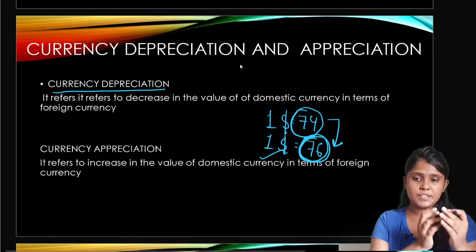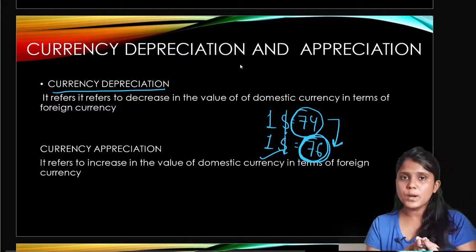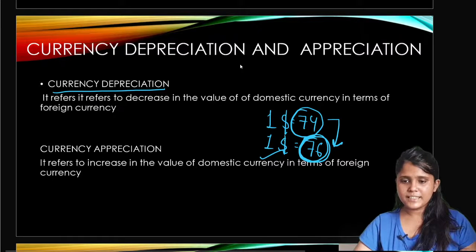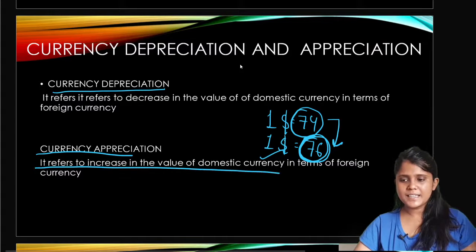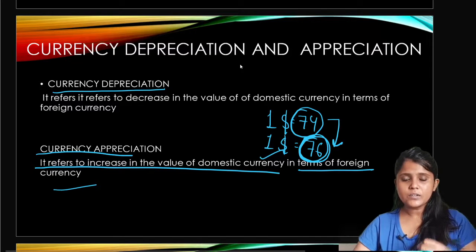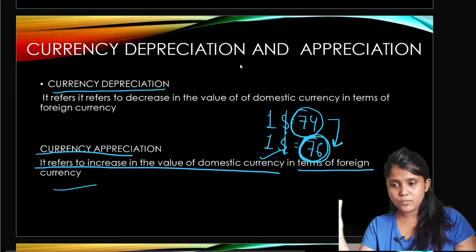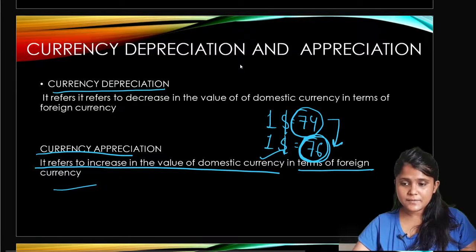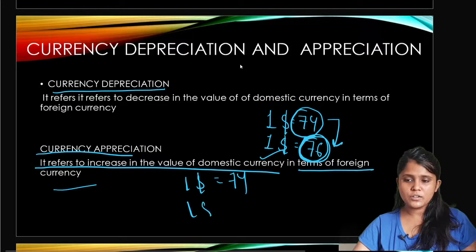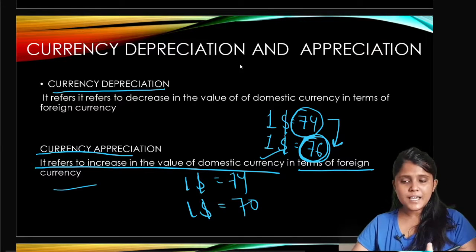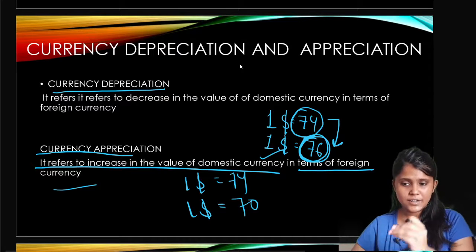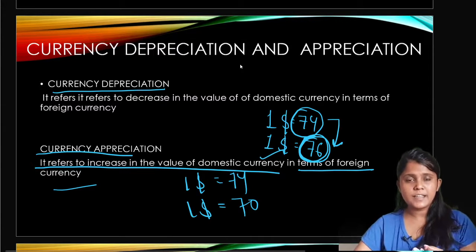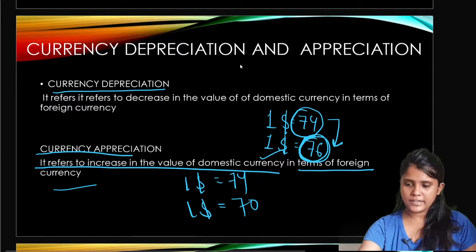When the value of our currency decreases relative to foreign currency, we call it currency depreciation. Currency appreciation refers to an increase in the value of domestic currency in terms of foreign currency. For example, if 1 dollar equals 74 rupees but now we can get 1 dollar for only 70 rupees, the price has decreased, meaning the value of our domestic currency has increased.